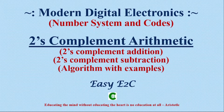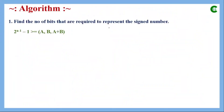Let's start today's class with the algorithm. The first step, as we learned in one's complement representation, is to find or evaluate the value of n. The formula we follow is: 2 raised to the power n minus 1, minus 1, should be always greater than or equal to a, b, and a plus b or a minus b — the operation we are performing — where a and b are the two given numbers.